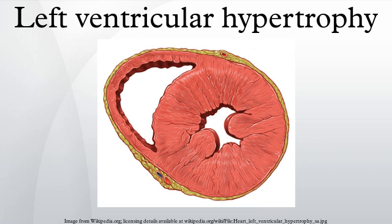Two-dimensional echocardiography can produce images of the left ventricle. The thickness of the left ventricle as visualized on echocardiography correlates with its actual mass. Normal thickness of the left ventricular myocardium is from 0.6 to 1.1 cm as measured at the very end of diastole. If the myocardium is more than 1.1 cm thick, the diagnosis of LVH can be made.